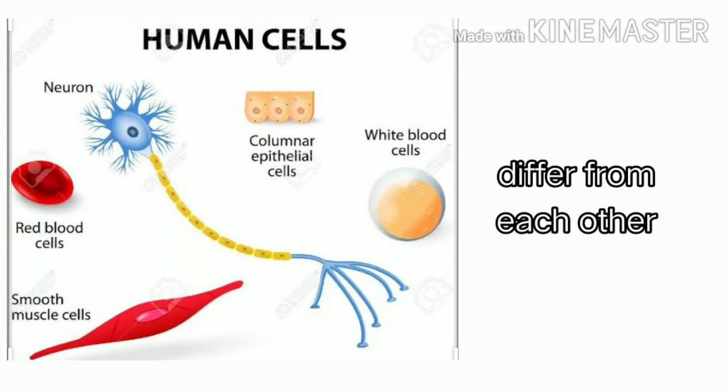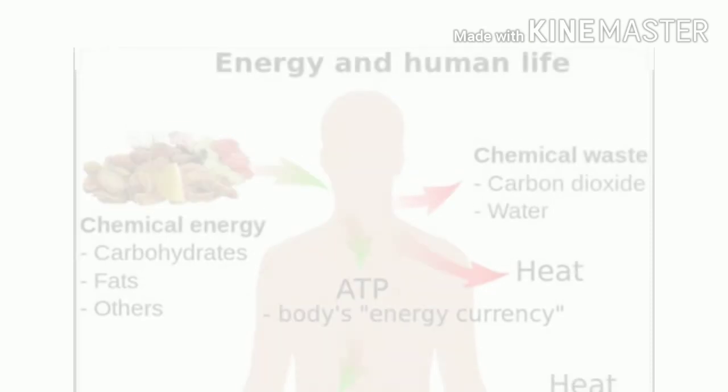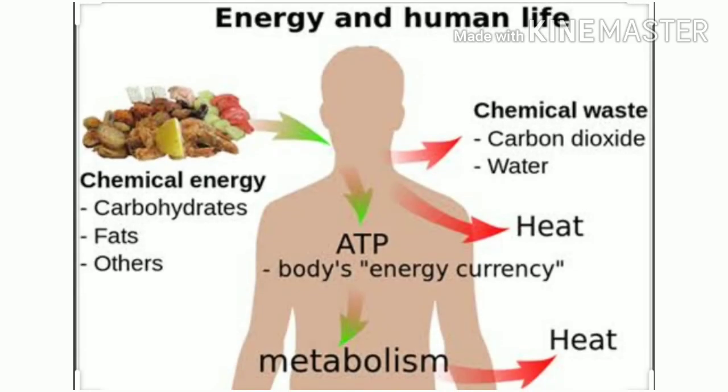Many cells of the body often differ from one another, but all of them have certain basic characteristics alike. For instance, oxygen reacts with carbohydrates, fats and proteins to release energy that is required by all types of cells to function and keep us alive.